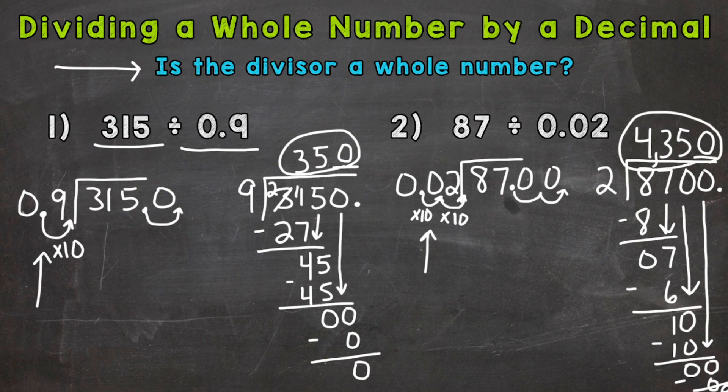So there you have it. There's how you divide a whole number by a decimal. We always need to ask ourselves, is the divisor a whole number when we see decimals within a division problem? If it's not a whole number, we need to multiply it by a power of 10 in order to make it a whole number. Whatever you do to the divisor, the outside number, you need to make sure you do to the dividend, the inside number. And then go through your division process. And that will put you on the path to getting the correct answer.